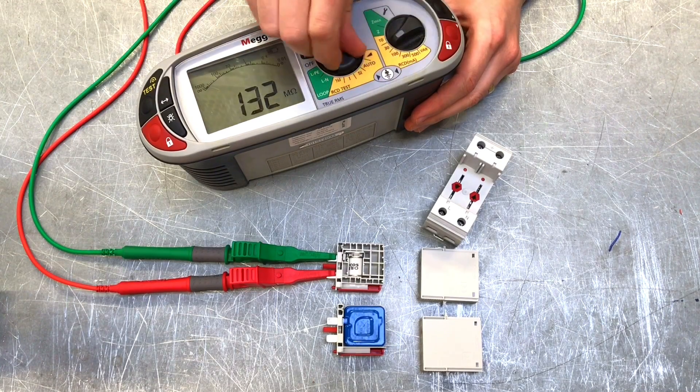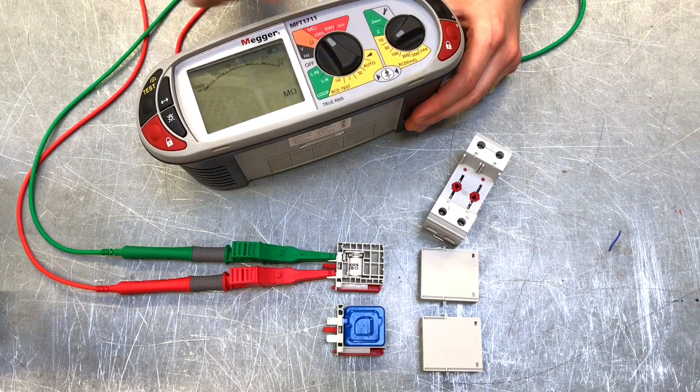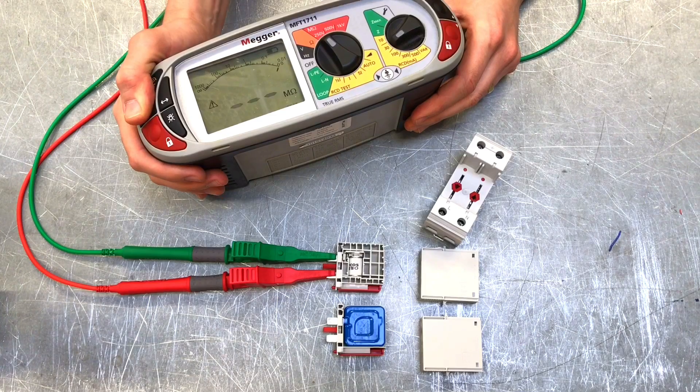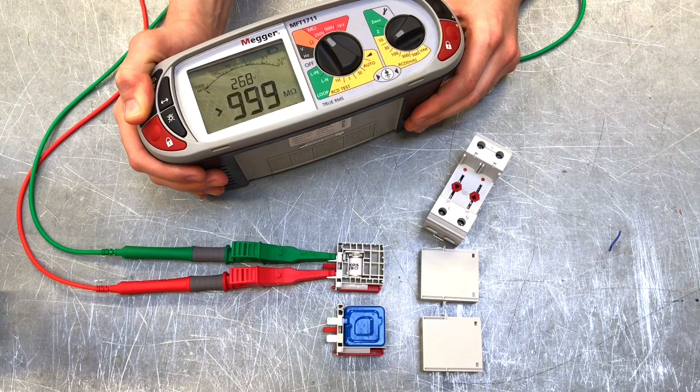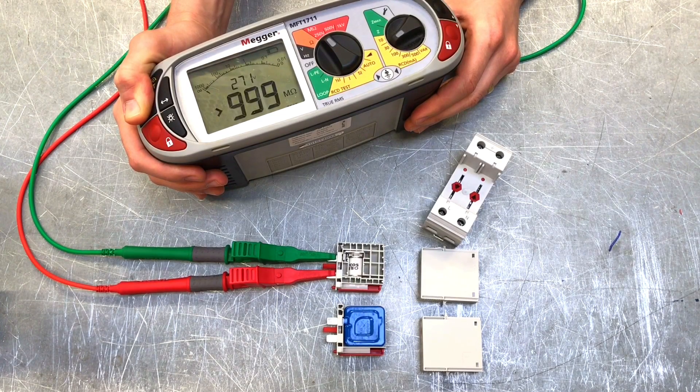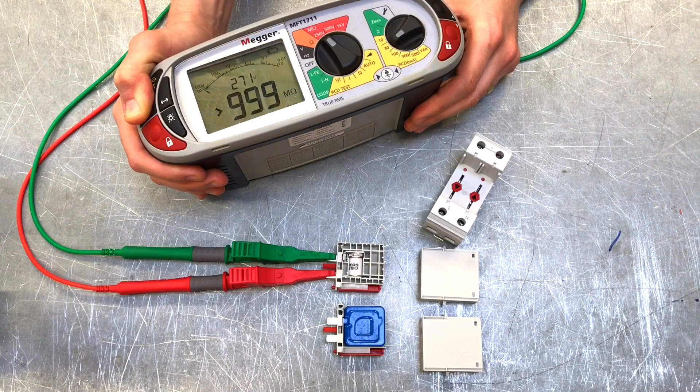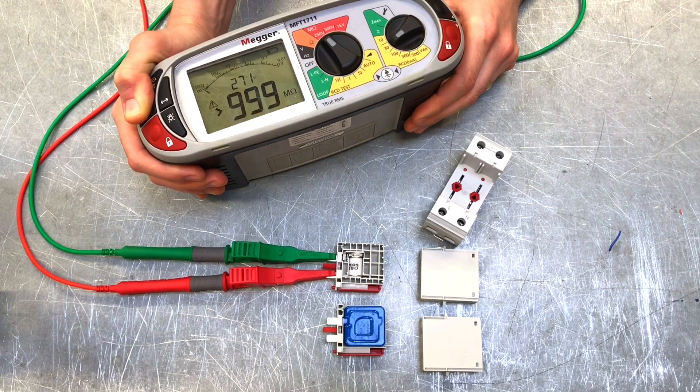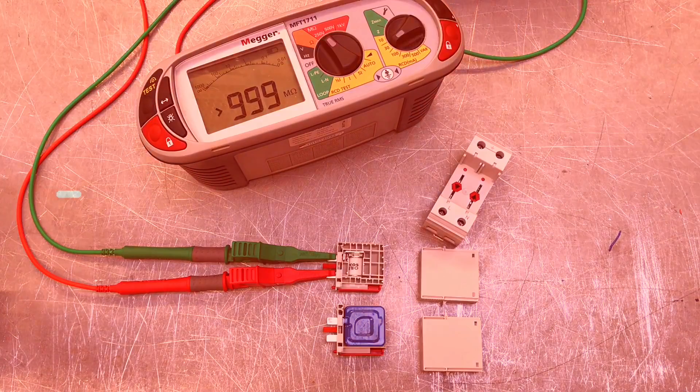But again, if we go back to 250 volts being applied here, we should see that this just goes back to its normal value. You can see there that the component has not become permanently damaged by that higher voltage that we applied to it. Thank you, Joe. See you for your next D-Fix.